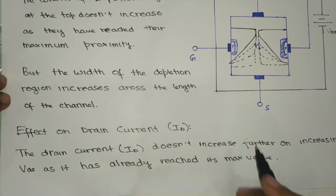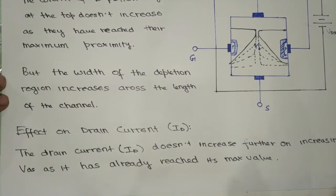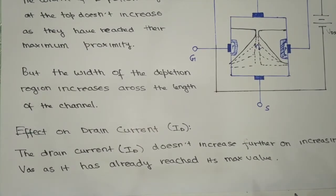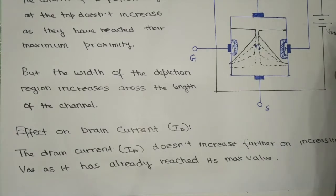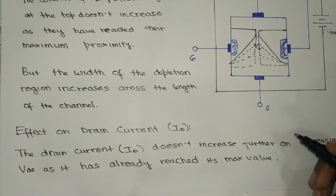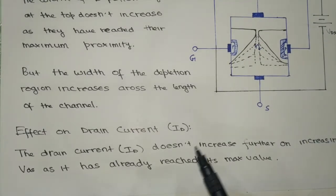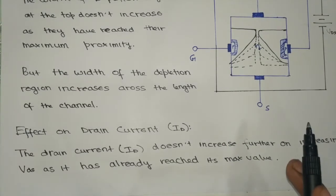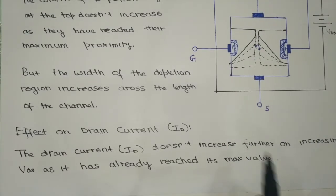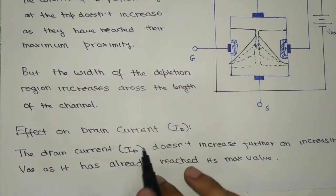So what would be the effect of this on the drain current? The drain current does not increase further on increasing VDS, as it has already reached its maximum value. We had seen before that on increasing VDS, the drain current ID increased, but when it has already reached the pinch-off condition, the drain current remains constant.